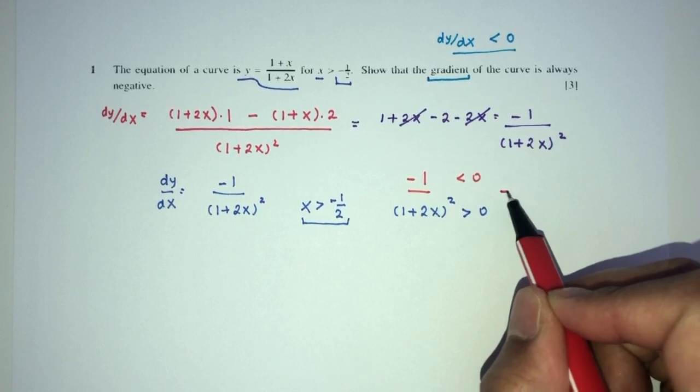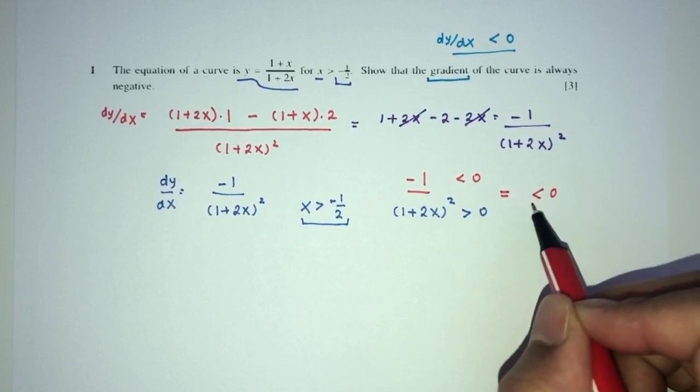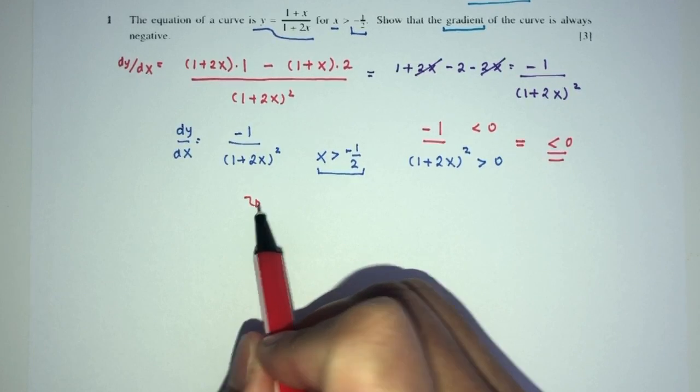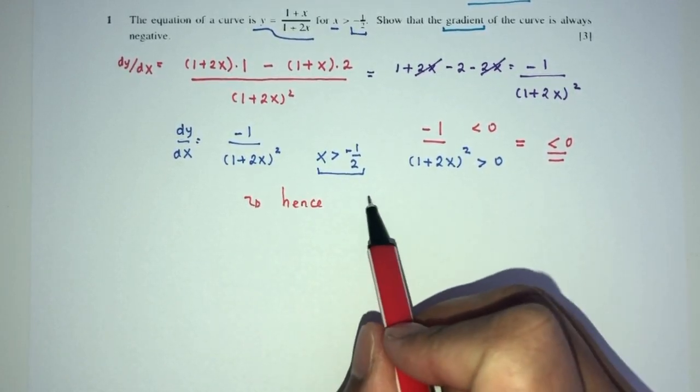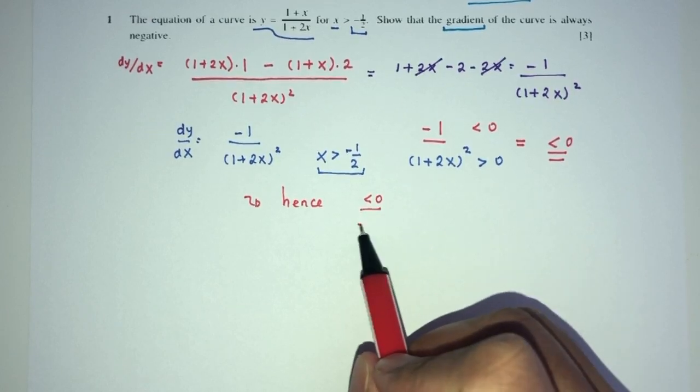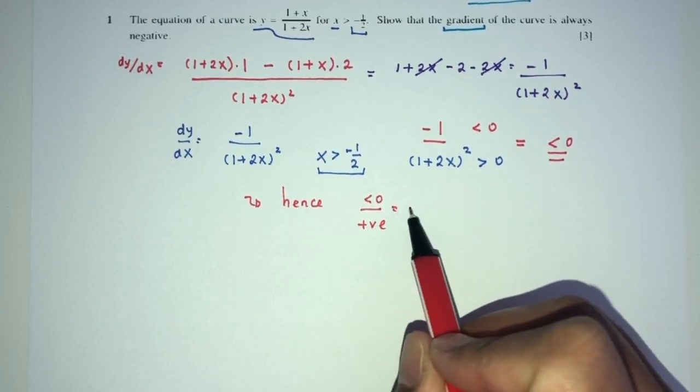And minus 1 would always be negative. Now, negative divided by positive will always be negative. Thus, hence, because we have a negative value divided by a positive value will always be negative value.